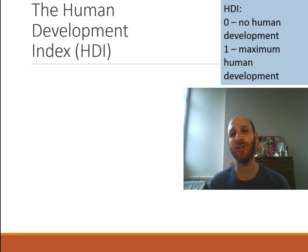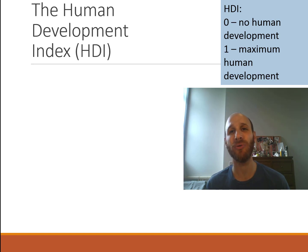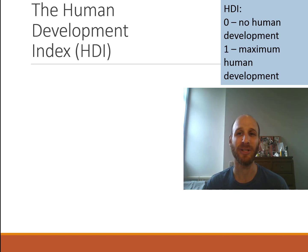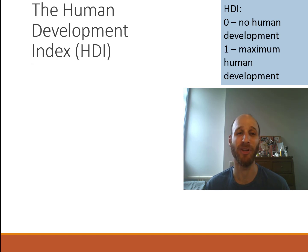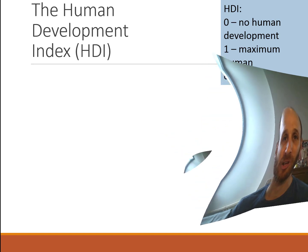With the HDI, a score of zero means no human development, and one is maximum human development. So let's take a look at what makes up the HDI.